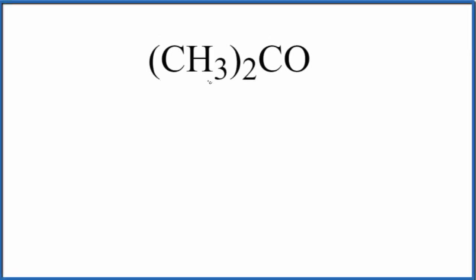Let's write the Lewis structure for CH3 two CO. This is acetone, and you'll see acetone written this way as well. It's a little more condensed where we added all the atoms up to give us this kind of shorter formula.